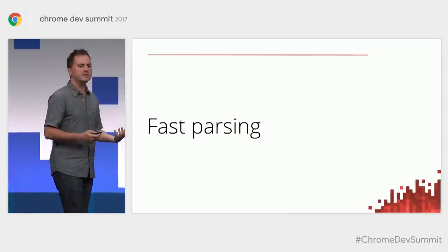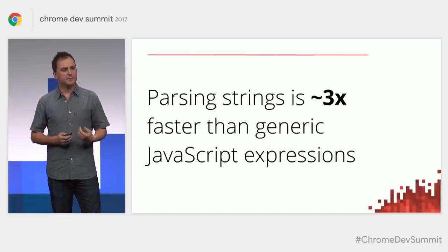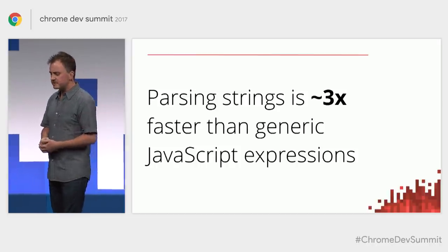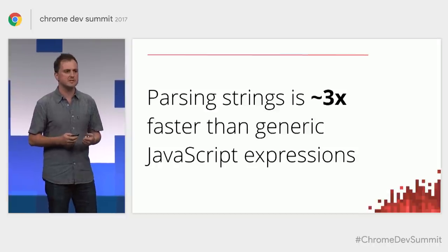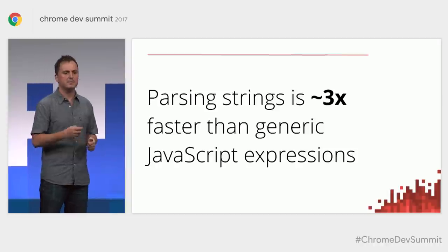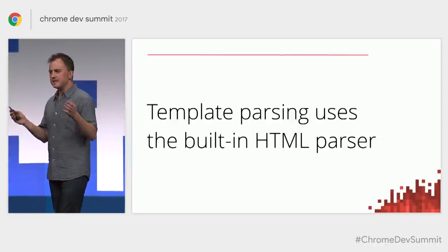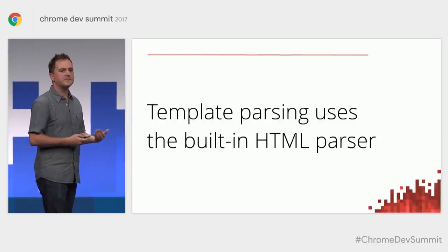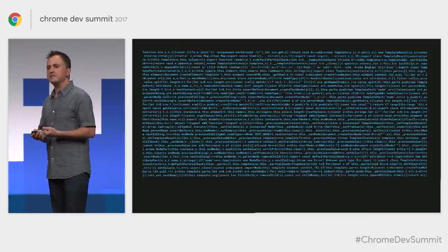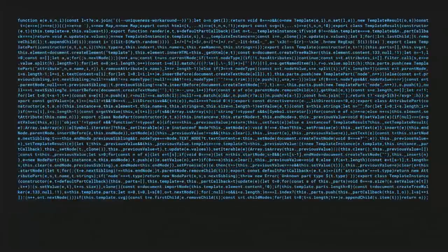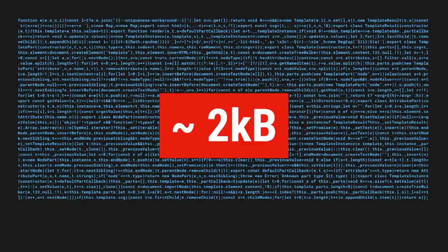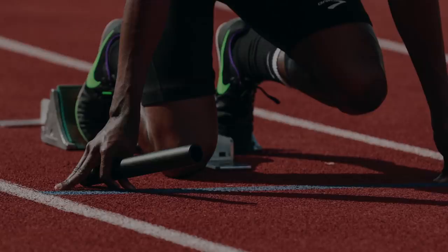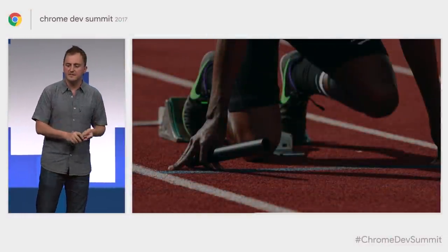Lit HTML is also fast because it takes advantage of the browser's fast built-in parsing. Parsing strings in JavaScript is roughly three times faster than parsing generic JavaScript expressions. We take the HTML content of a template and pass it to the highly optimized C++ HTML parser, giving us fast parsing speed without shipping any parsing logic with the template system. This means Lit HTML is very small — the entire core library fits on a single slide at 18-point font. Lit HTML is roughly 2 kilobytes in size, and we're working hard to keep it that way.